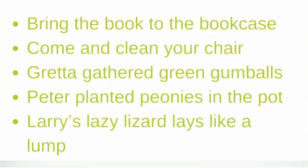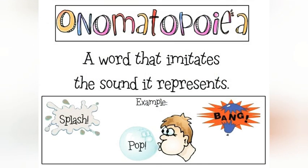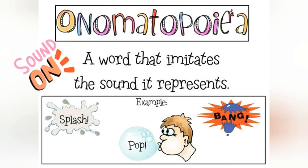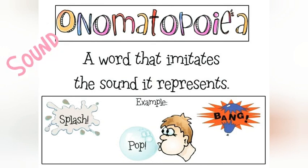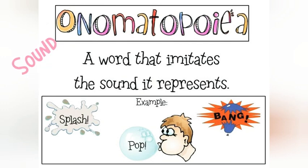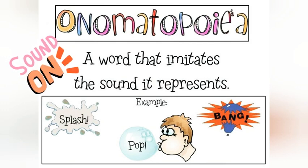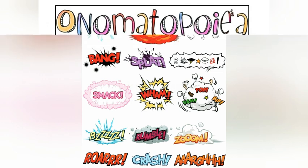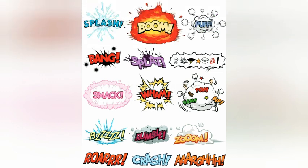That means the sound is repeated at the beginning of words. The next figure of speech is onomatopoeia, which means a word that imitates the sound it represents. For example, 'tick-tock' for a clock. This is also found in nursery rhymes like 'The Wheels on the Bus'.